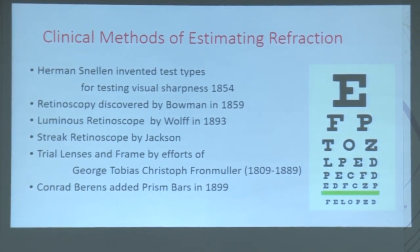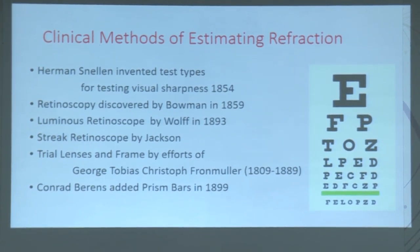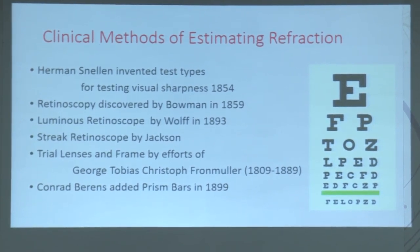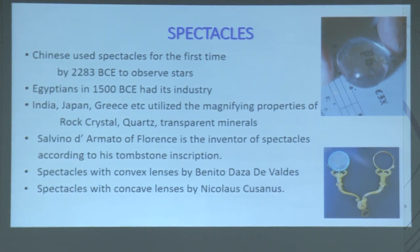Herman Snellen, as everybody knows, invented test types for testing visual sharpness in 1854. Retinoscopy was discovered by Bohman in 1859. The luminous retinoscope was invented by Wolf in 1893, the streak retinoscope by Jackson. Trial lenses and frames were developed through the efforts of George Tobias Christo and Frontmuller. Conrad Burns added prism bars in 1899.